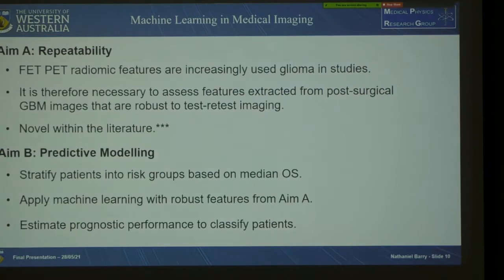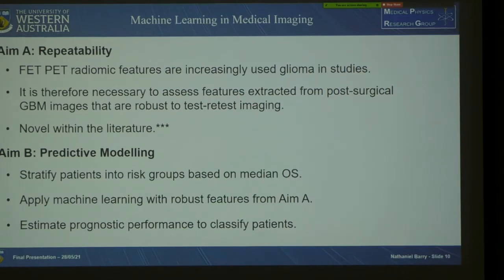These considerations led to the two aims of my thesis. Aim A is a repeatability analysis: FET PET radiomic features are increasingly used in glioma studies, so we found it necessary to assess whether FET PET radiomic features are robust to imaging and multiple time points using test-retest imaging — a novel approach in the literature. For Aim B, predictive modelling, we wanted to stratify patients into low and high risk groups based on overall survival, applying machine learning with the robust features from Aim A to see if robust features are also predictive of patient outcomes.